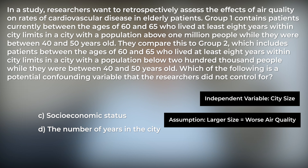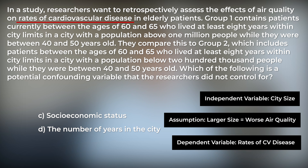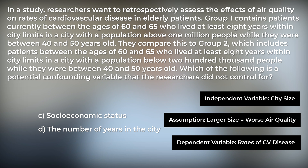Let's now think about the dependent variable: what are the researchers measuring as an outcome? As the question states, the researchers are measuring rates of cardiovascular disease. What are the researchers holding constant across both groups? Each group has patients between 60 and 65 years old, and each group lived at least 8 of 10 years between the ages of 40 and 50 in their respective city. The researchers accounted for years lived in the city by specifying at least 8 years, so answer choice D is not correct.